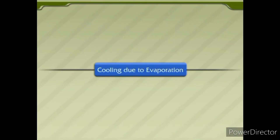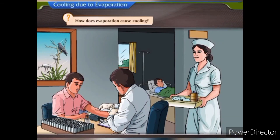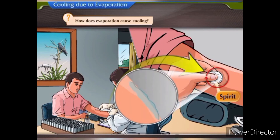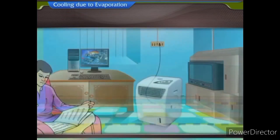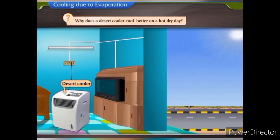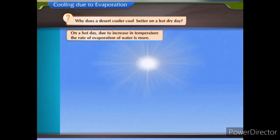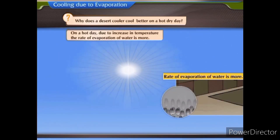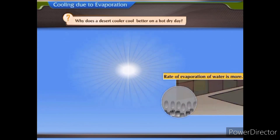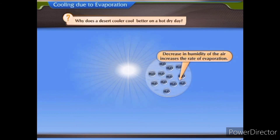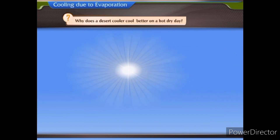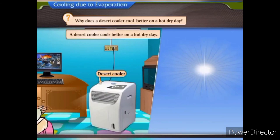Cooling due to evaporation. How does evaporation cause cooling? When evaporation occurs, the particles of the liquid absorb heat from the surroundings. Thus, the surroundings lose heat and get cooled. Why does a desert cooler cool better on a hot dry day? On a hot day, due to the increase in temperature, the rate of evaporation of water is more. Also, the dryness of the air increases the rate of evaporation. Therefore, a desert cooler cools better on a hot dry day.